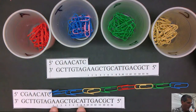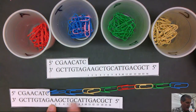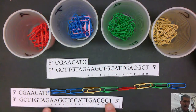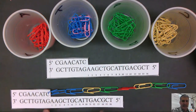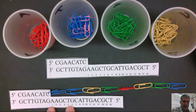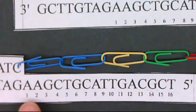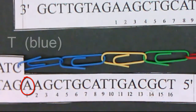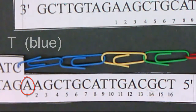I have modeled it here using paper clips — I've modeled the first 8 bases being replicated. Notice how there is an A on the DNA template strand and I put a T, a blue paper clip, to match that on the opposite strand.